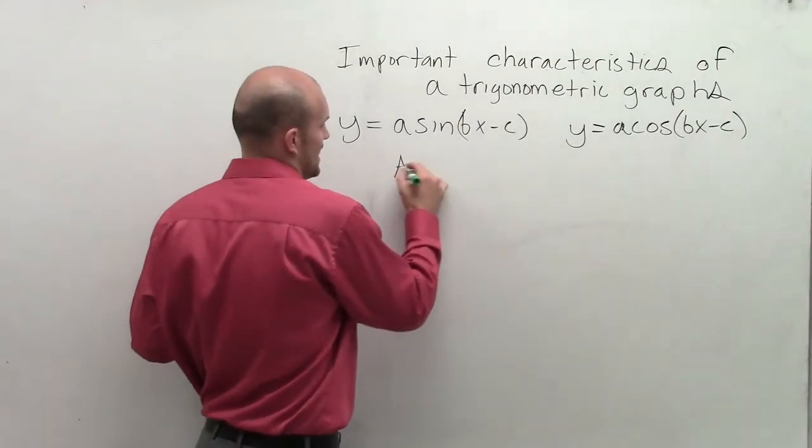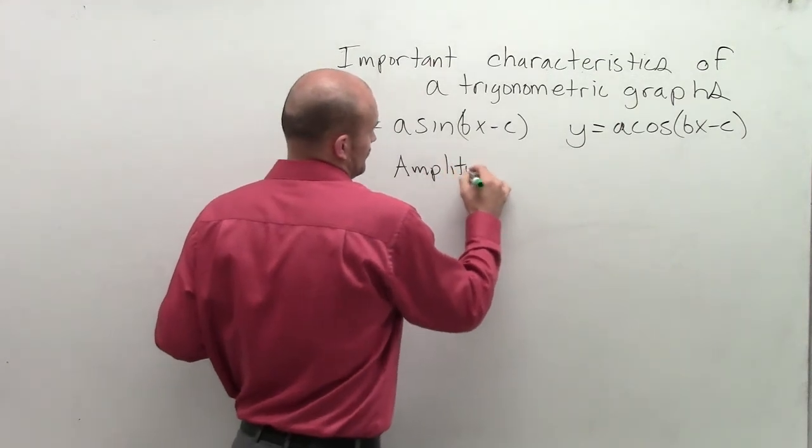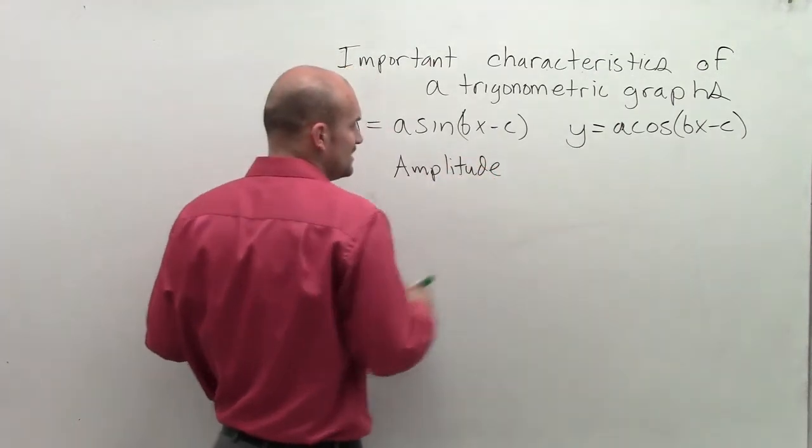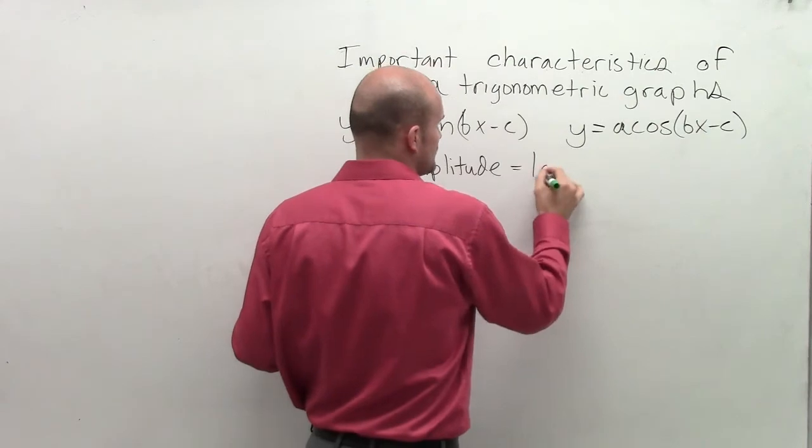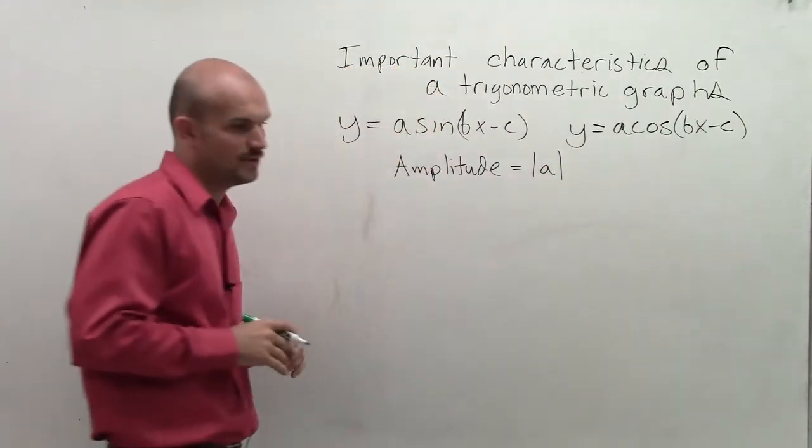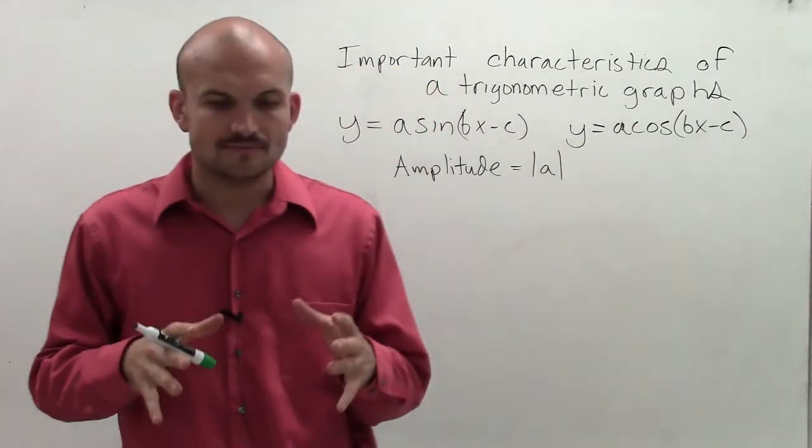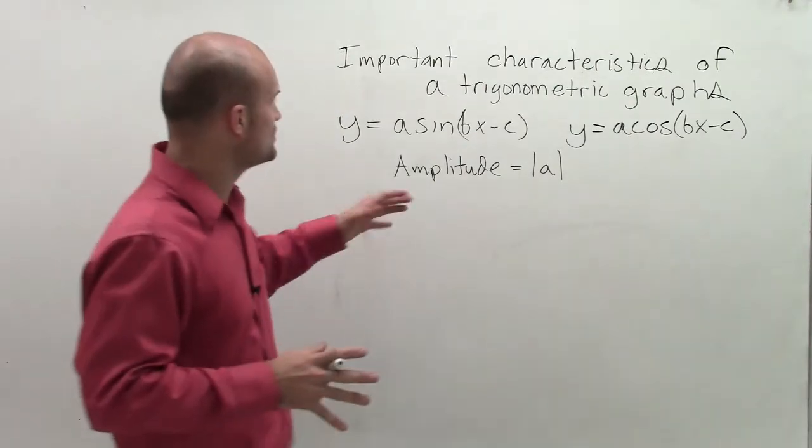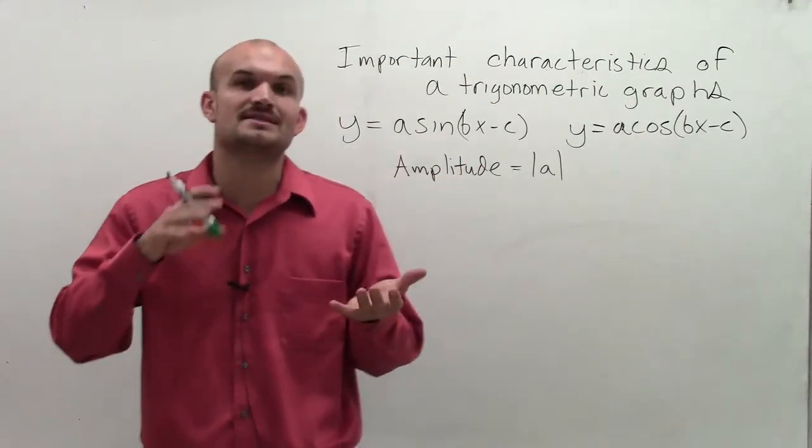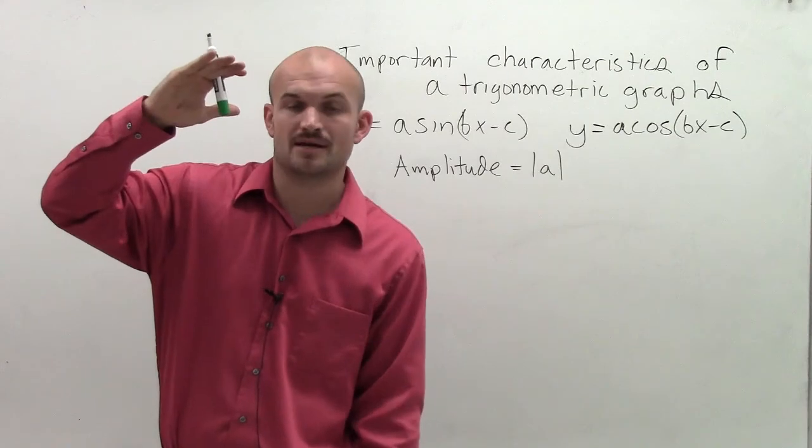The first one is the amplitude. If you remember, by finding the amplitude, we said the amplitude is equal to the absolute value of a. And what that's going to do is tell us the distance from the maximum to the minimum.